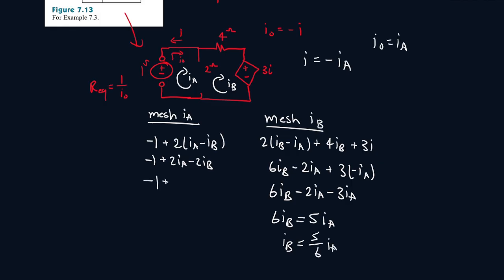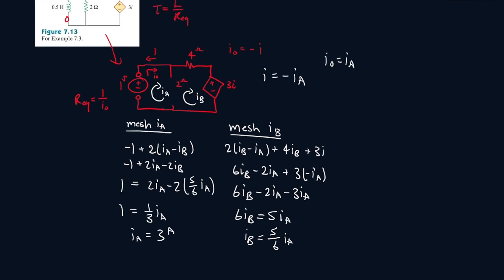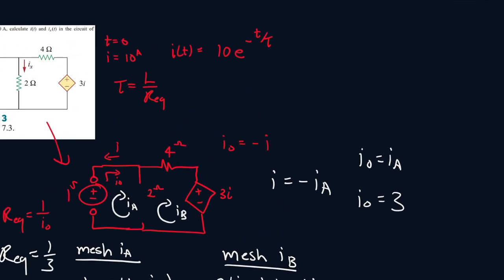So now here, 5 over 6 IA. All this is equal to 0. So let me bring this to the other side. So 1 equals 1 over 3 IA, so IA is equal to 3 amps. And I0 is equal to IA, so it will be 3 amps here. So the resistance equivalent will be 1 over 3.